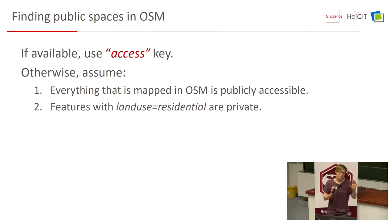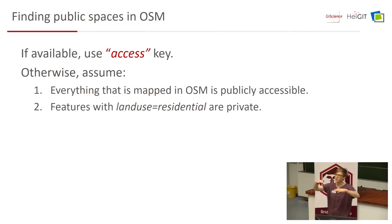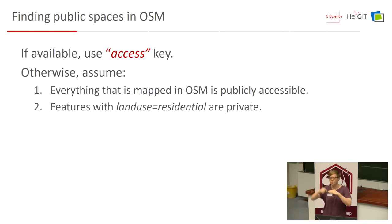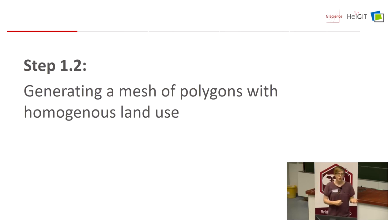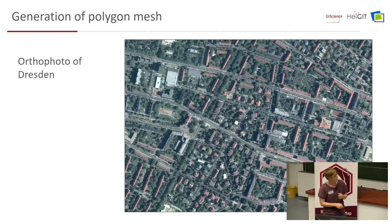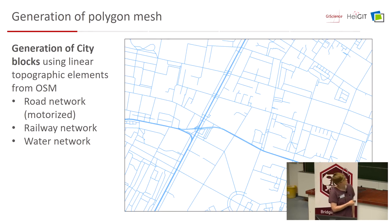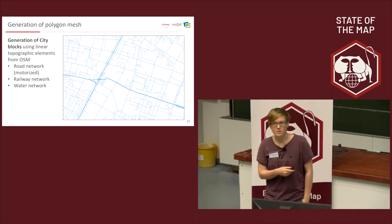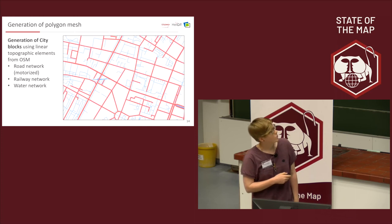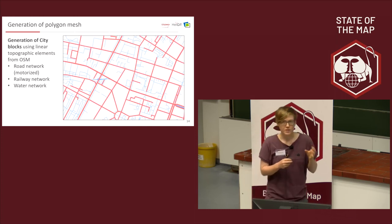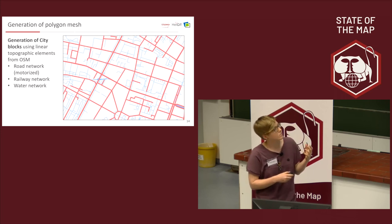Now we have relevant tags, but in OpenStreetMap features are overlapping — there's a 'landuse=residential' and on top a 'leisure=park', for example. I need to decide which one is more important. The solution is generating a polygon mesh where each polygon has a homogeneous land use type. We extract topographic elements like roads, waterways, and railways from OpenStreetMap, take the bigger ones, and form city blocks. Then we buffer roads and railways to exclude the traffic area.